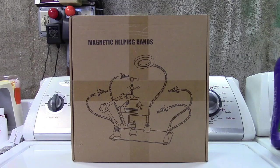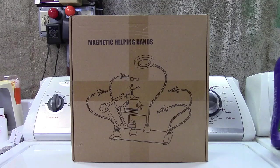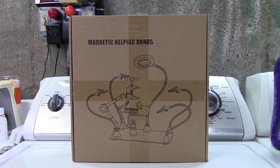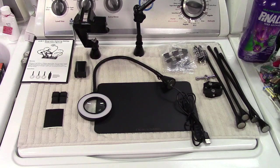This is the NOEVSBIG Magnetic Helping Hands Soldering Station with Lamp. Let's take it out of the box. There is a lot included in this kit.